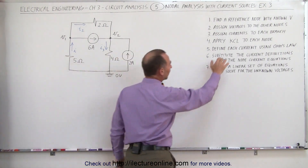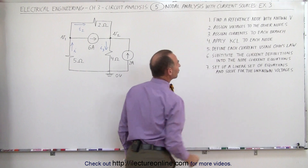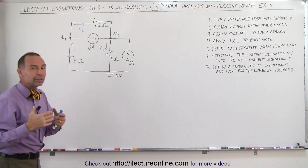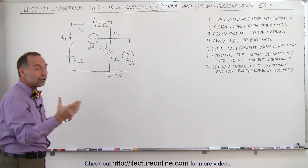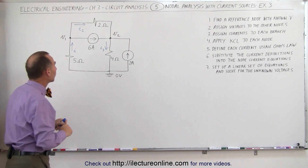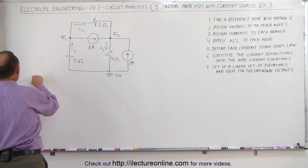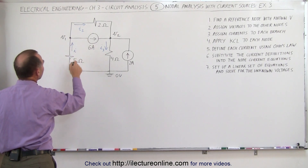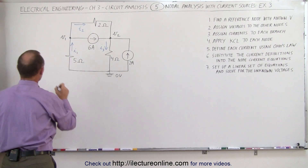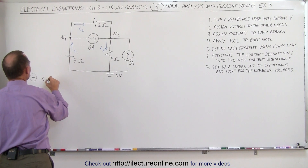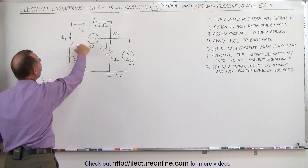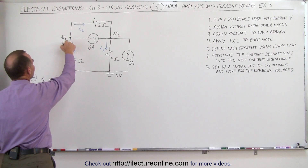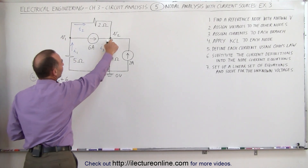The next thing we want to do is obtain some equations using Kirchhoff's current law. We look at each of the two nodes, looking at all the currents that enter the node and all the currents that leave the node, and set those equal to each other. For node number one — this is step four — what is entering this node is I1, and that should equal the sum of I2 and 6 amps, giving us our first equation.